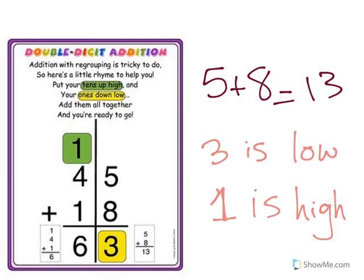Let's take a look at the rule. When it's regrouping it's a little bit tricky, but here's a little song to help: 'Put your tens up high and your ones down low, add them all together and you're ready to go!' For example, if we have 5 plus 8, that's 13.